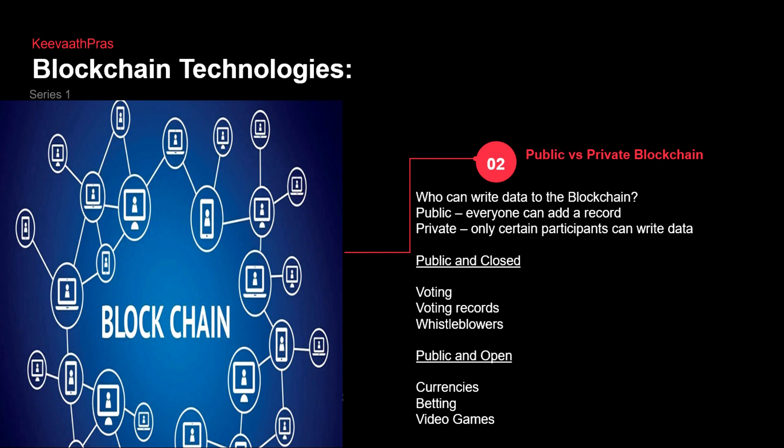Let's get into the different kinds of blockchain — public and private. There is only a subtle difference between open and closed within public and private. Blockchain is only in append mode, so you can only add but not edit any kind of data. Who can write the data? In public, anybody can come and write or add the record. In private, it's only a closed group — only certain people can do so.